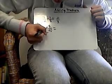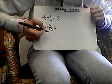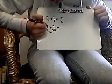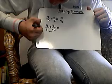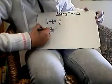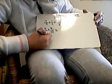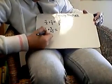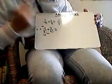Because 5 goes into 10 twice, you write a 2 here. Times 5 is 10, times 4 is 8.